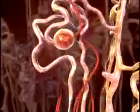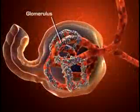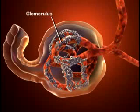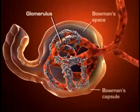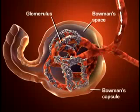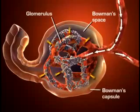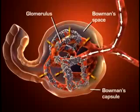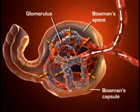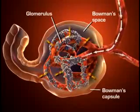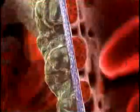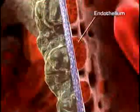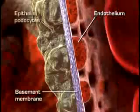Each nephron consists of a glomerulus and a system of tubules. The glomerulus is a unique high-pressure mass of capillaries that filters the blood. The glomerulus is encased in a thin, double-walled capsule called Bowman's capsule. The glomerular filtration membrane consists of three layers of capillary wall: the endothelium, the basement membrane, and the epithelium.